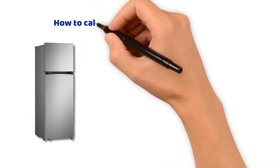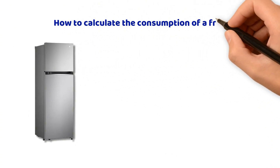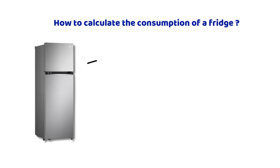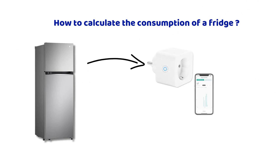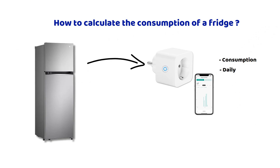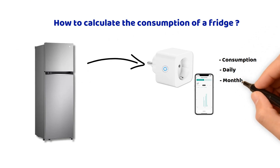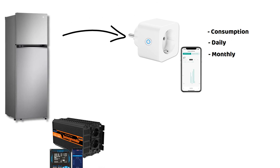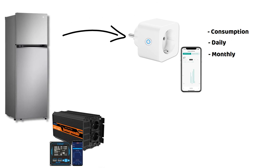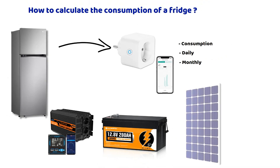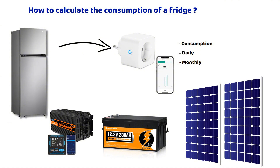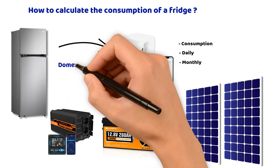In this video we will see how to calculate the power consumption of a fridge easily, thanks to a small device that most of you already have at home. We will look at the consumption at a specific moment, over a day, and over a month. This will allow us to size a power inverter, a battery, and determine how many solar panels we will need to be self-sufficient. A small exercise that can of course be applied to other devices once you understand the principle.